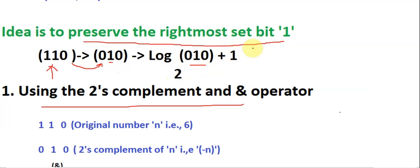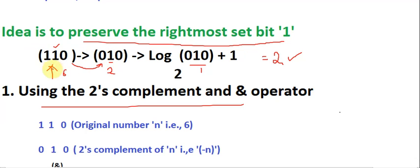For number six, the binary result in base 10 form has the value two. When I take log base two of two, I get one, and adding one gives the final output of two — which is the rightmost set bit position, since I'm indexing from one. So the idea is to obtain this format from the given number n using binary operations.